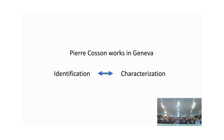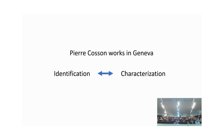Whenever we have a sentence like that that we want to validate, we have two elements. One is identification — who are we talking about? And the other part is characterization. And when the sentence becomes 'antibody 9010 works in immunofluorescence experiments,' the same stands true. Are we talking about the same antibody? Identification. What does it do exactly? Characterization.